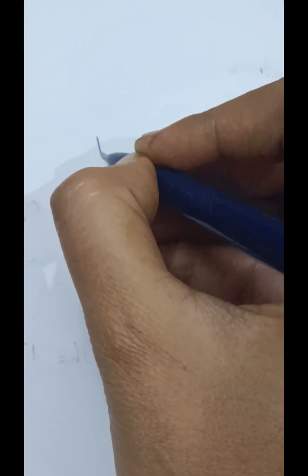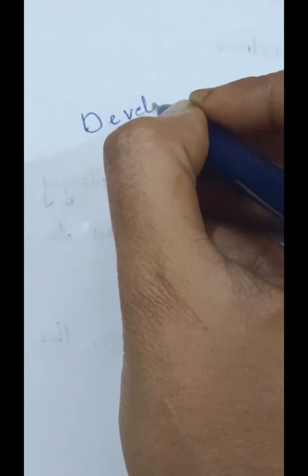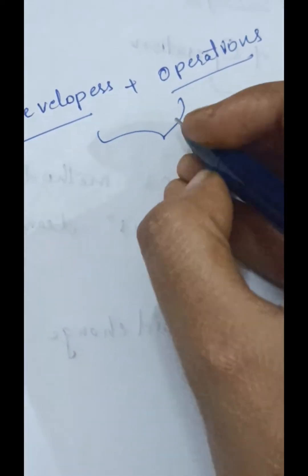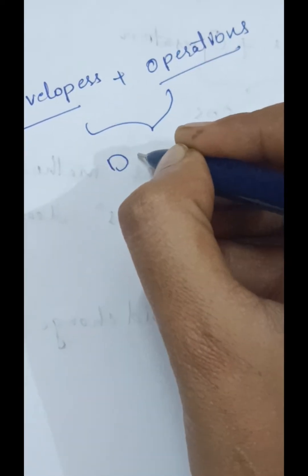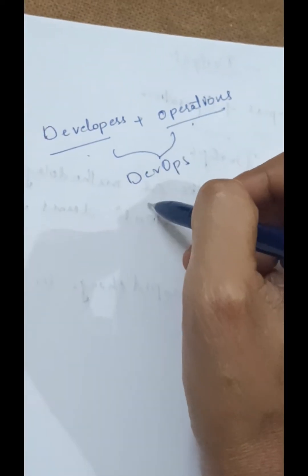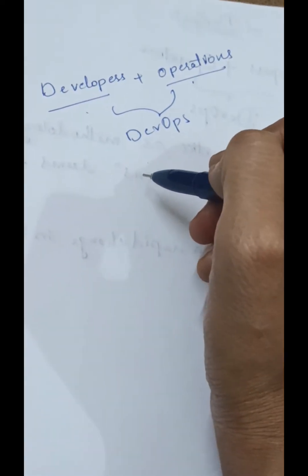Today we are going to discuss DevOps. DevOps is a combination of two words: developers plus operations, where these two teams work together to produce the product or code more fast.